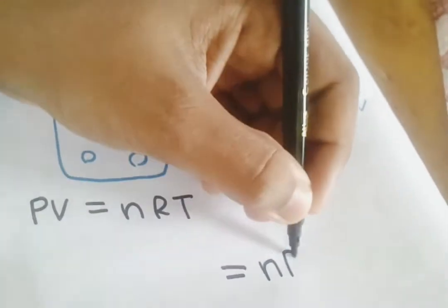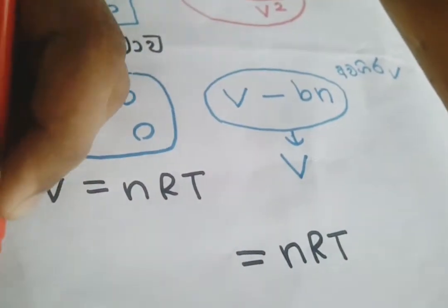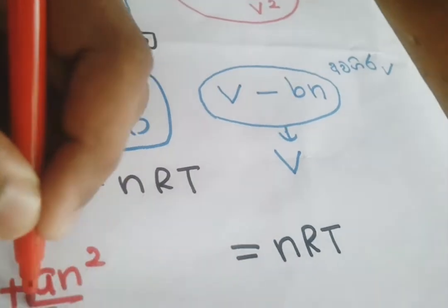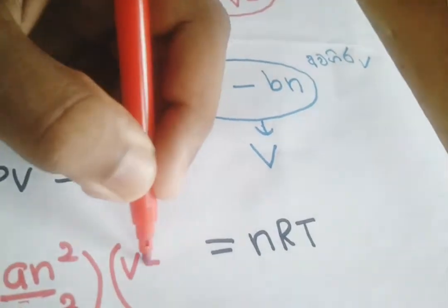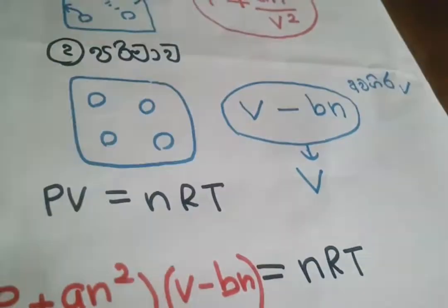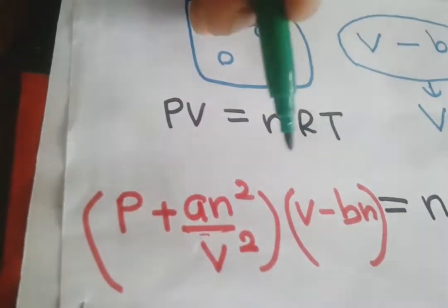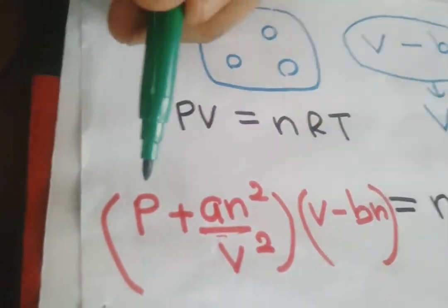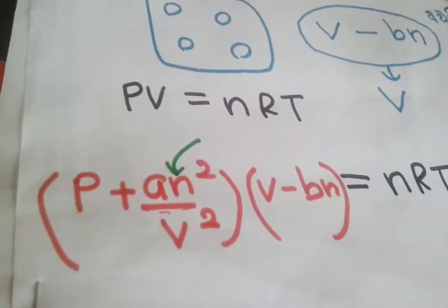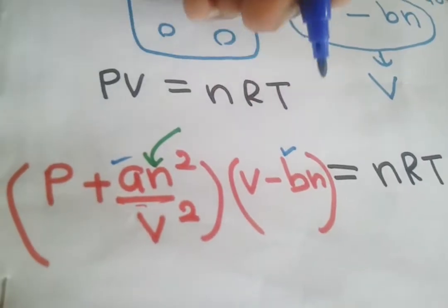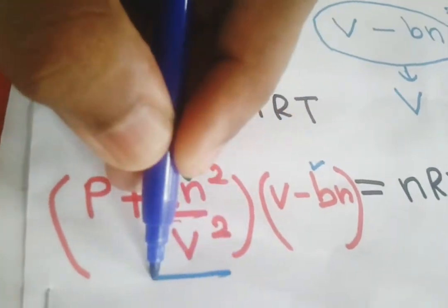This is P. This is V. This is A. This is B and this is N. This is PV. This is a B. This is not bad.